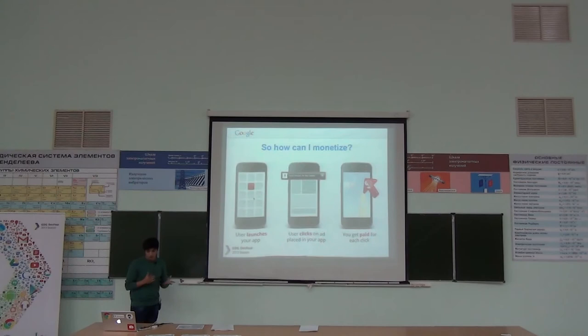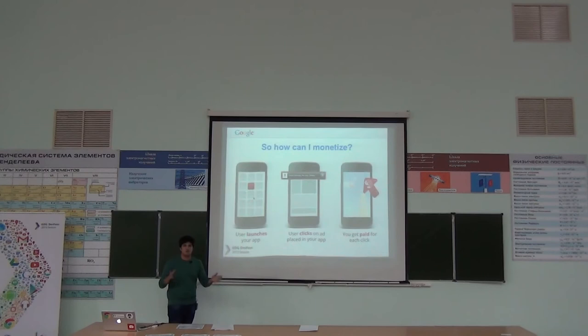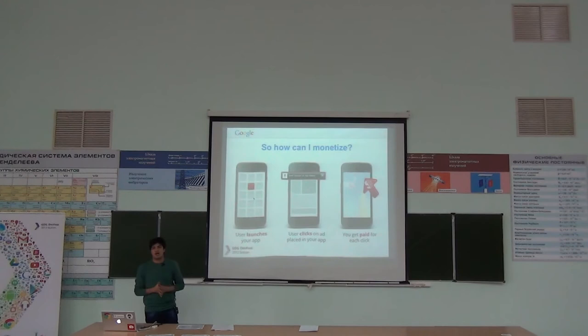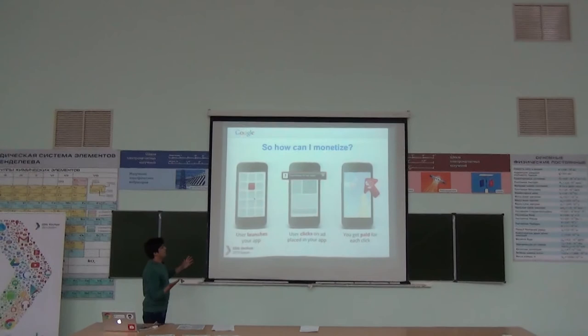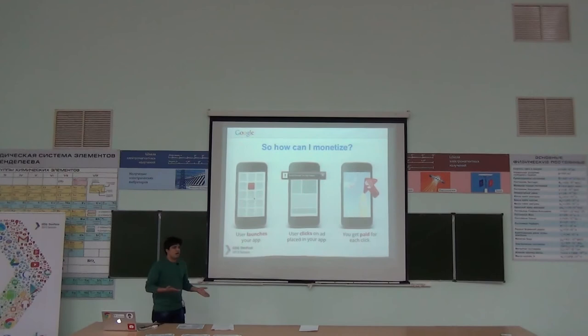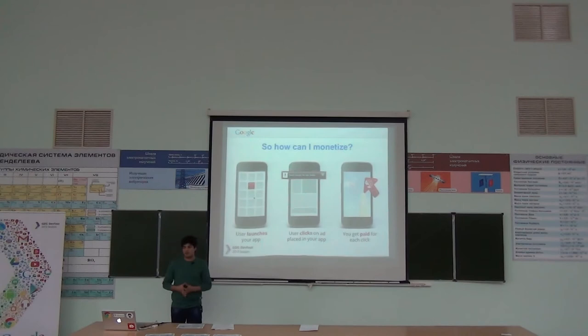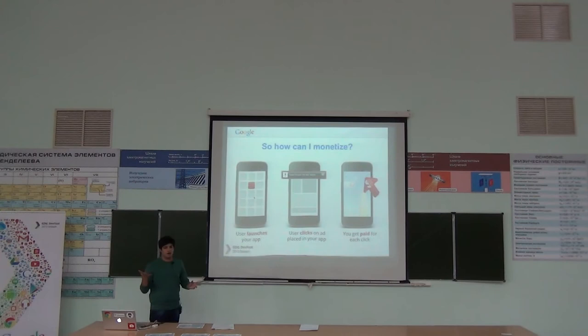To monetize, you first have to integrate the SDK — include the library in five lines of code, run your app, and upload it to the Play Store. The user launches your app, and at the top or bottom they see the ad. If they find it relevant, they click on it, and it goes to a Play Store page or browser page for which the ad was made. At that point, your app is paused and no impressions are taken.